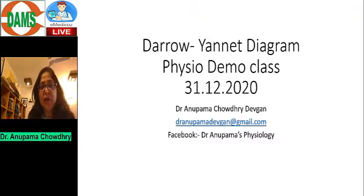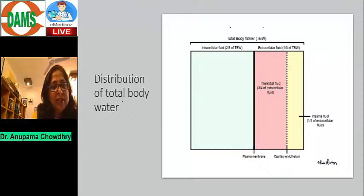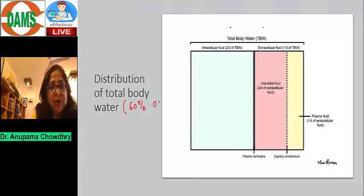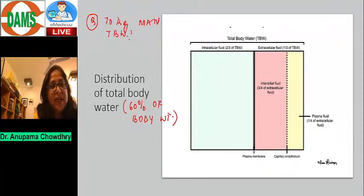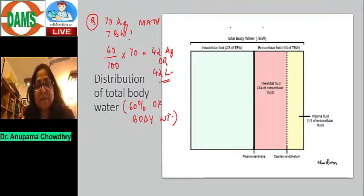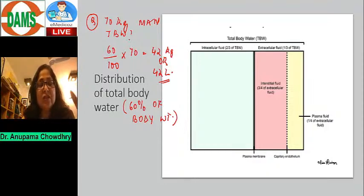Let's have a look at the distribution of total body water. When we calculate total body water as a percentage of body weight, it is 60% of the body weight. So in a 70 kg man, total body water is 60% of 70, which gives 42 kg or 42 liters, since one kg of water equals one liter.